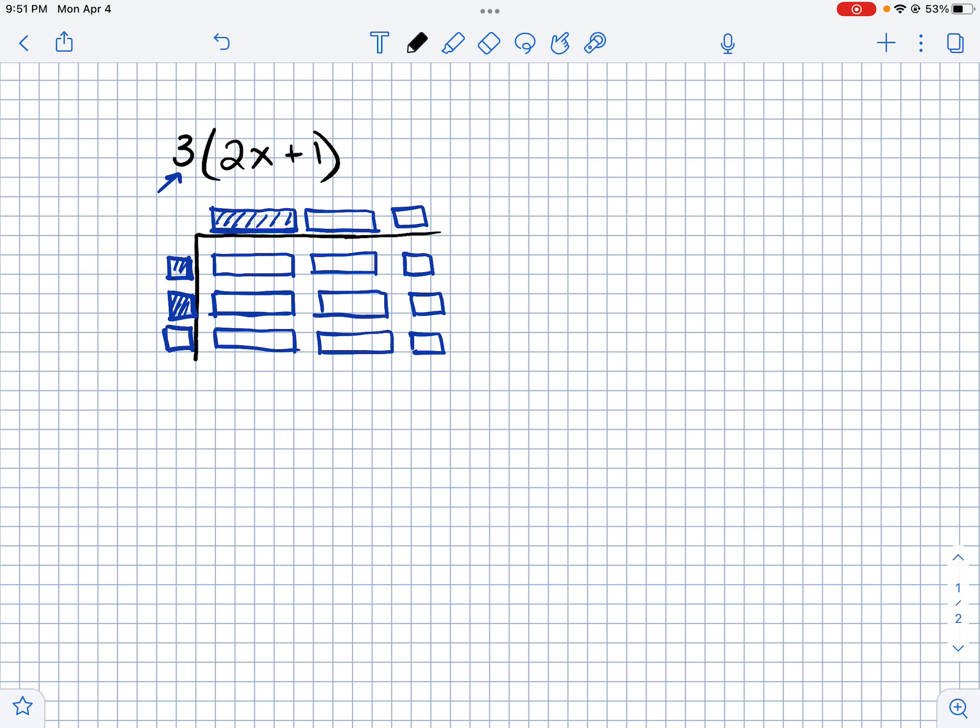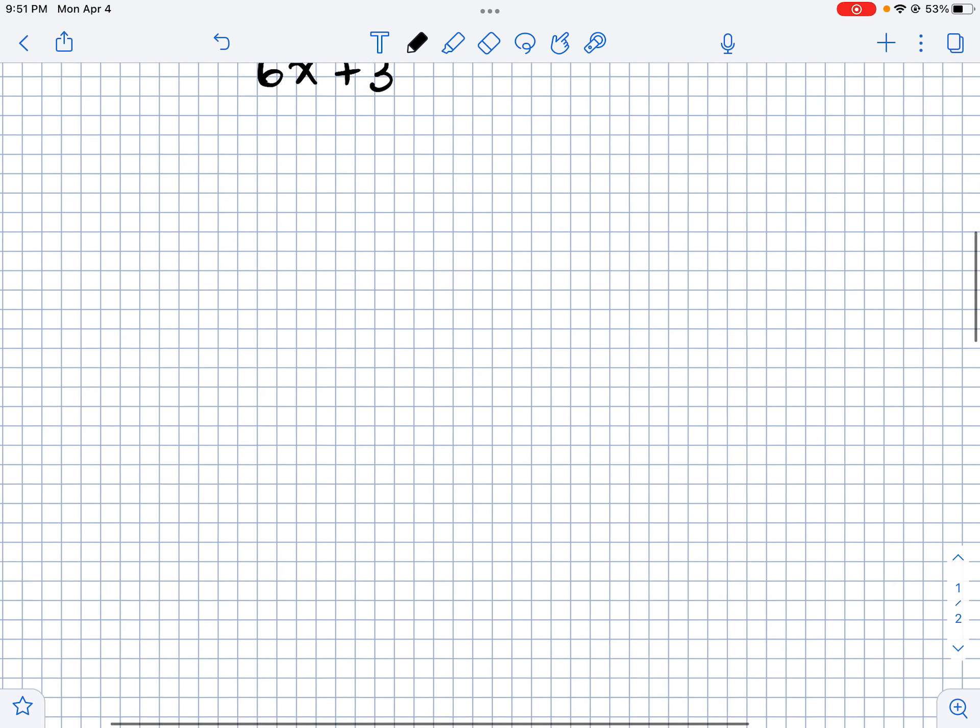So all together I've got 1, 2, 3, 4, 5, 6 X's and 3 ones. So 6X plus 3.